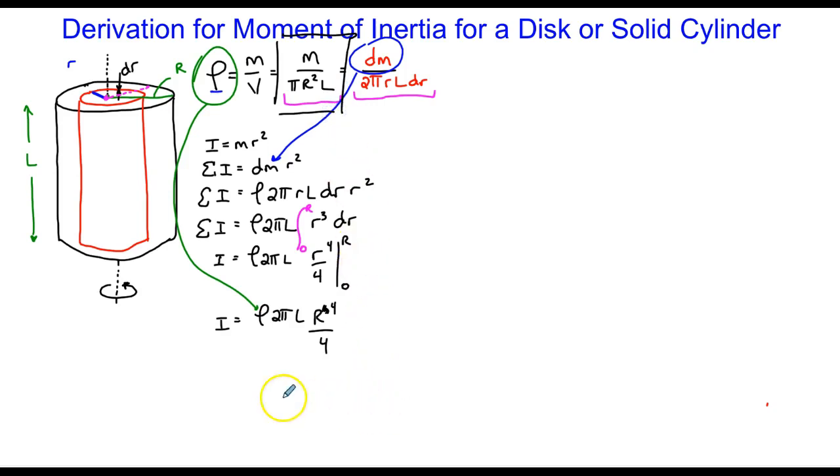So now it becomes the mass of the entire cylinder. Nothing else in the numerator has changed so I'm just going to add that two pi L capital R to the fourth. The denominator is going to be equal to pi R squared L and I can't forget the four that was there to start with.